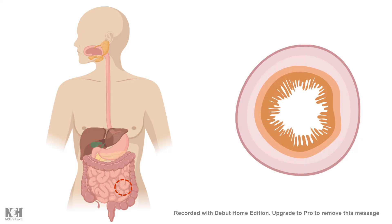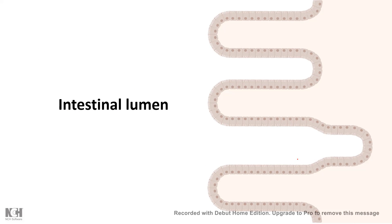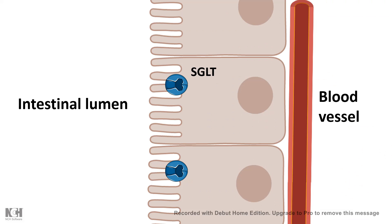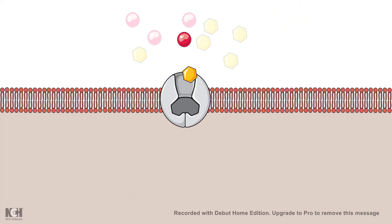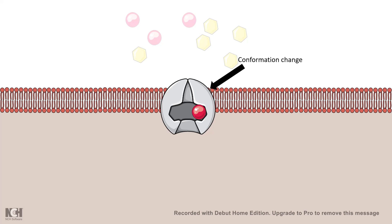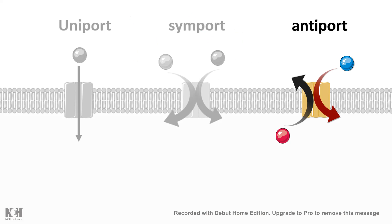For symport, consider the cross-section of the intestine. Intestinal epithelial cells have SGLT — the sodium-dependent glucose transporter. This transporter takes sodium along with glucose simultaneously. Both bind to the transporter, leading to a conformational change which ultimately releases glucose as well as sodium inside the cell. This is how we absorb glucose and sodium simultaneously in our intestine.